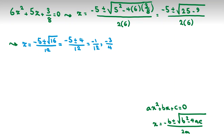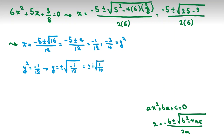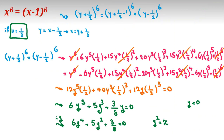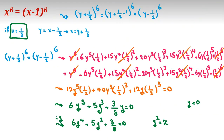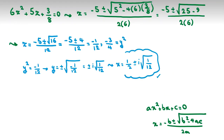Since y squared equals z, we consider the first case: y squared equals negative 1/12, so y equals plus or minus i times square root of 1/12. Since x equals y plus one half, we get x equals one half plus or minus i times square root of 1/12. This gives two complex answers.